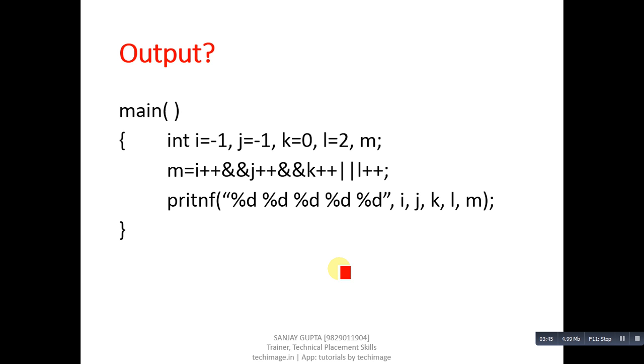This is next code segment. In this segment, AND and OR combination is there. You have to identify its output. So its output is 00131. Here five variables you have to print: i, j, k, l, and m. So i is 0, j is 0, k is 1, l is 3, and m is 1. These are the final values. Initially i is minus 1, j is minus 1, k is 0, l is 2, and m.